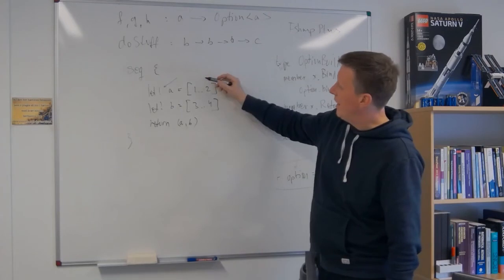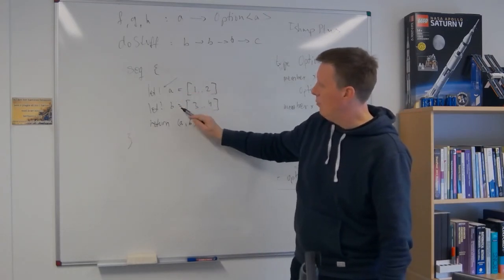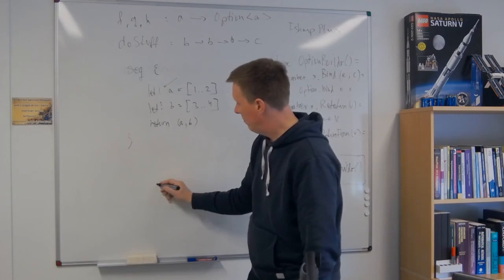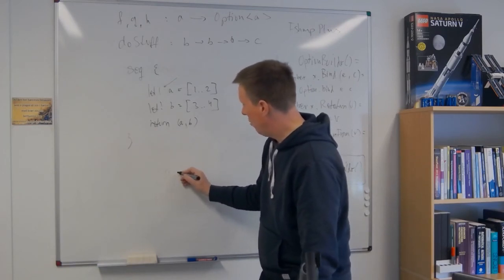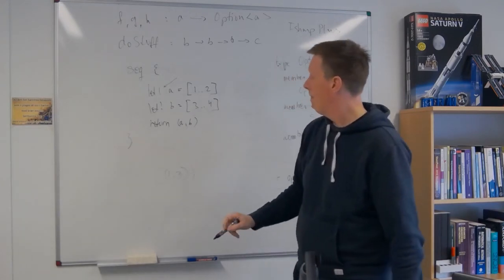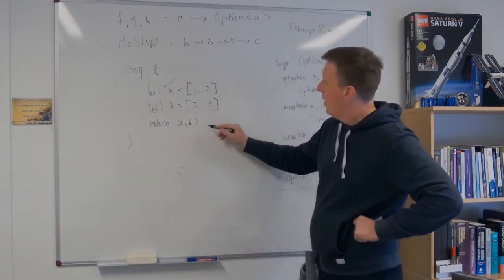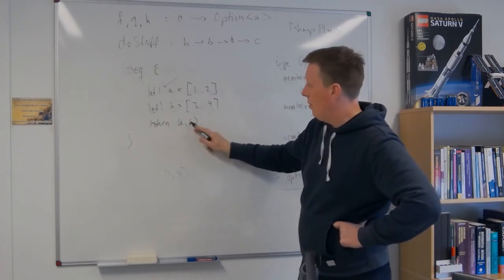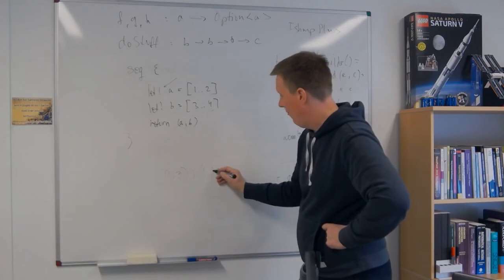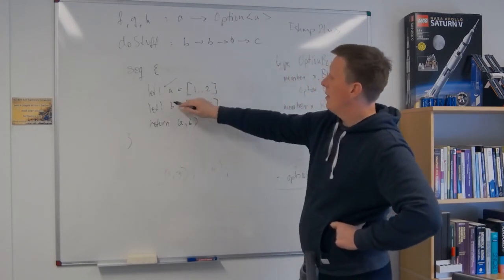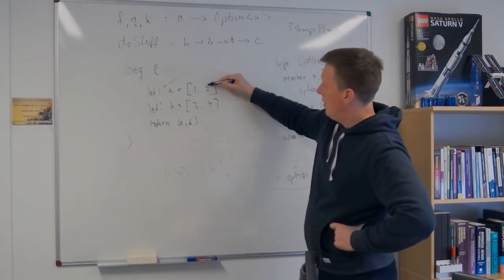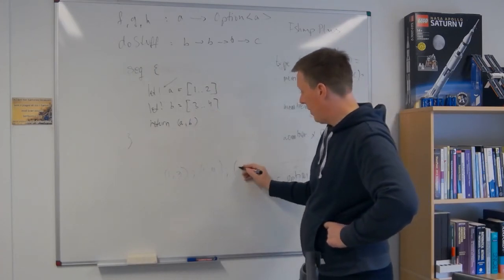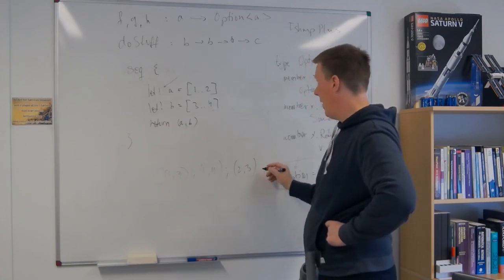And what happens here is that A will first assume the value one, then it will go to the next line, and B will assume the value three. And then B will assume the value four. A is still at one. And we're going to produce the tuple one, four. Now A, we have exhausted this list. We go back up here, and A now assumes two. And B assumes value three. So we get two, three. And then finally, two, four.